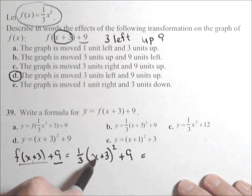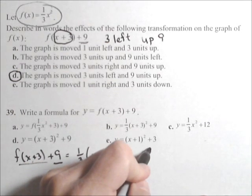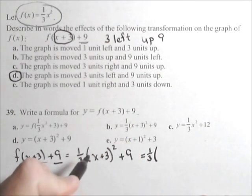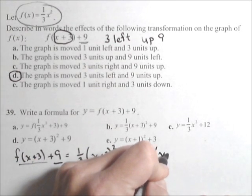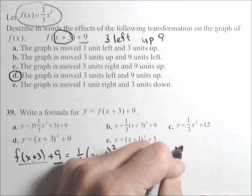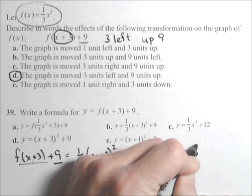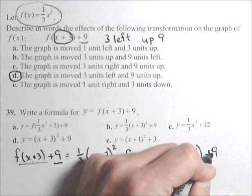Now a common mistake is to distribute this square and write it as x squared plus three squared. Can't do that, it has to be foiled out. And you want to foil it, it's going to be better to foil it out before you multiply in the one-third. So x plus three times x plus three, and at the very end we will be adding the nine.